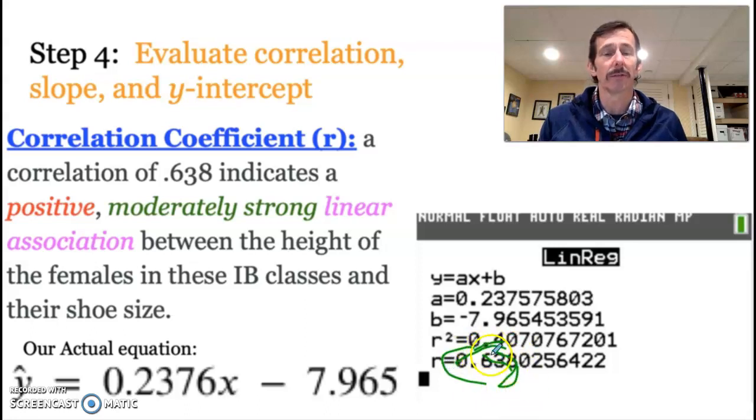One, it gives us the direction of our relationship, and that's either positive or negative. It tells us the strength, and this is a numeric value of it. So this is moderate at best. We're at 0.8 and above, it's considered strong, and the closer you get to one or negative one, the stronger it is.